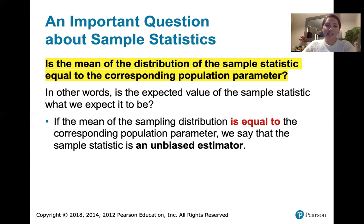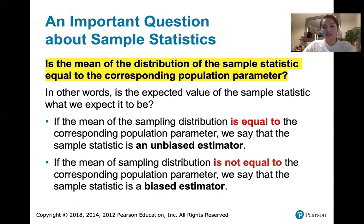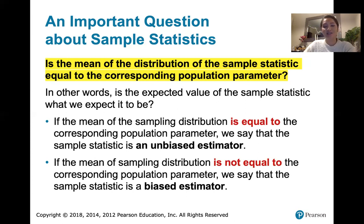If the mean of the sampling distribution of a sample statistic equals the corresponding population parameter, we say that sample statistic is an unbiased estimator — it's targeting exactly what we want and estimating what we want it to estimate. If the mean of the sampling distribution is not equal to the corresponding population parameter, we say that sample statistic is a biased estimator. We can still use it, but it's probably not a good idea because its expected value is not giving us the population parameter.